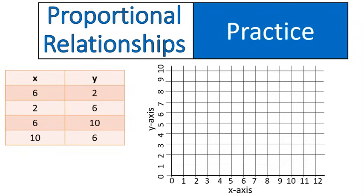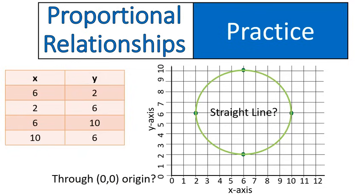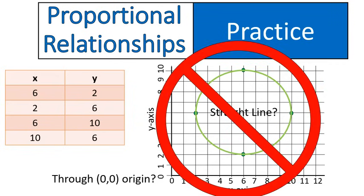All right, are we back? Did you do it? Did you graph this point 6, 2, and this point 2, 6, this point 6, 10, and this point 10, 6? And graph something that kind of looked like that. You're going like, how did he come up with that? That is certainly not a straight line, nor is it through the origin. That is absolutely not a proportional relationship. Sorry, not a proportional relationship. And you can tell by graphing it.